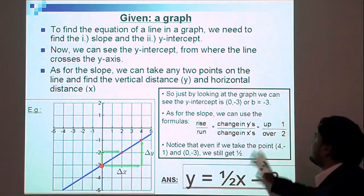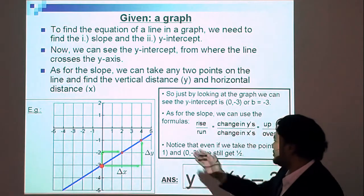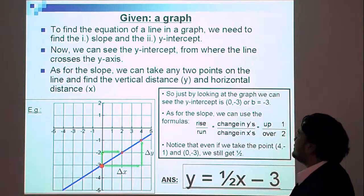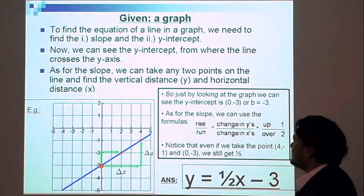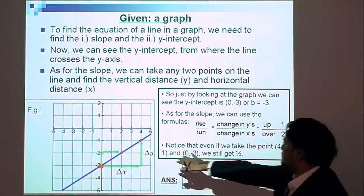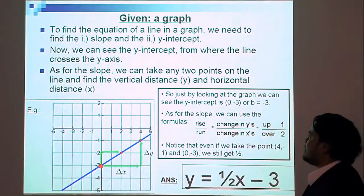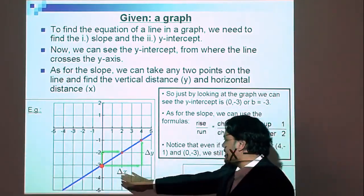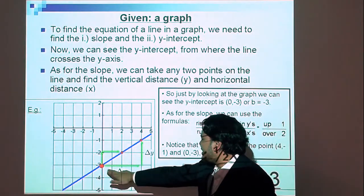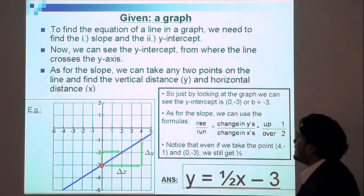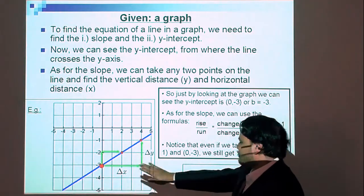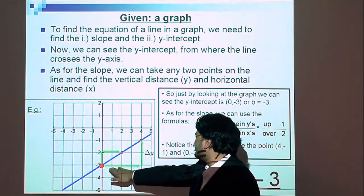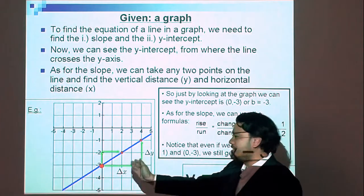Our next example: if we are given a graph, can we find the equation of this graph? To find the equation of a line from a graph, we need to find the slope and the y-intercept. We can see the y-intercept from where the line crosses the y-axis. Looking at this blue line, we can tell that the y-intercept is (0, negative 3). We know the value for b — now we have to find the slope.